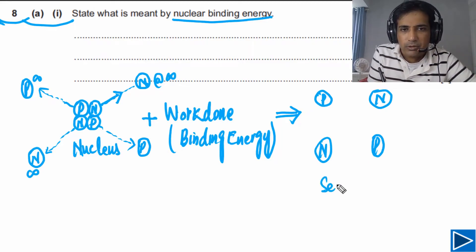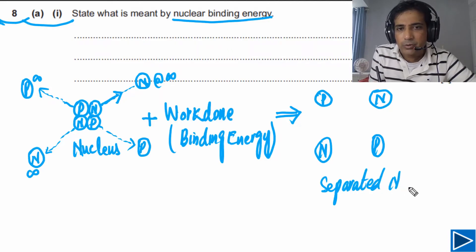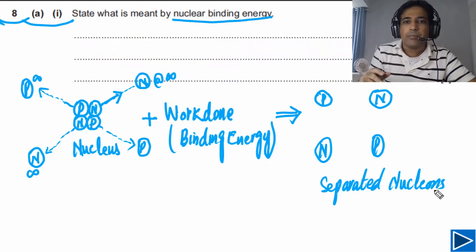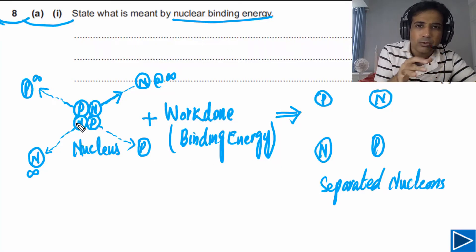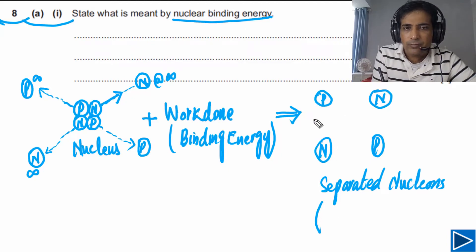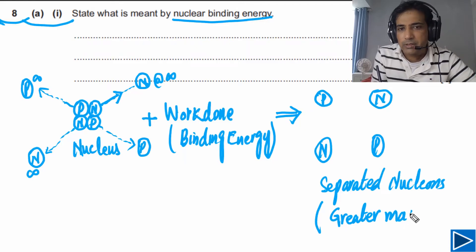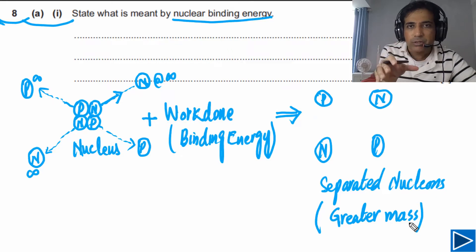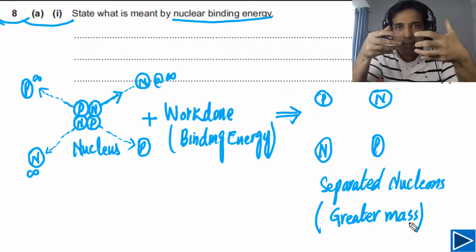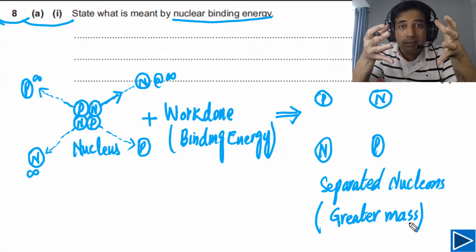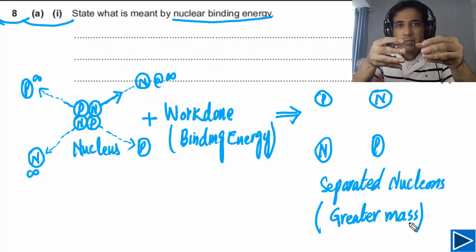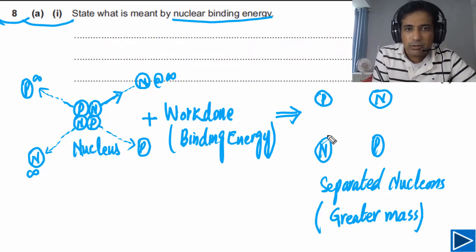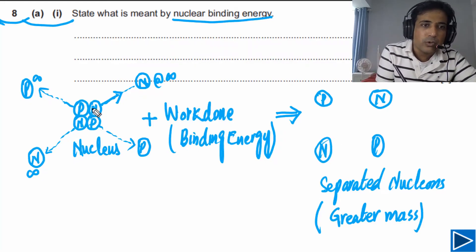These are separated nucleons. Now, comparing the mass of an individual neutron with the mass of a neutron in the nucleus: the mass of the individual neutron must be greater than the mass of the neutron in the nucleus. Because the work done gives energy to these nucleons, and as they gain energy, their mass increases — energy has been converted into matter.